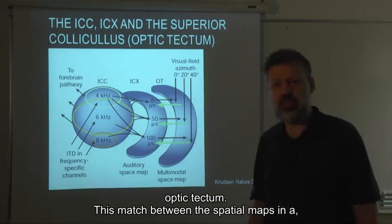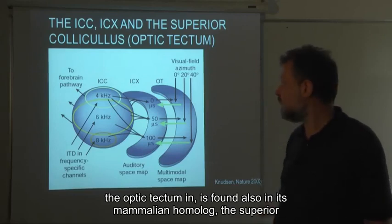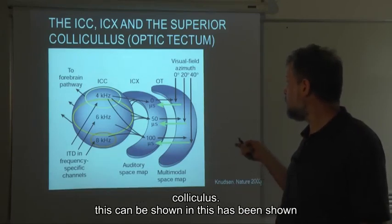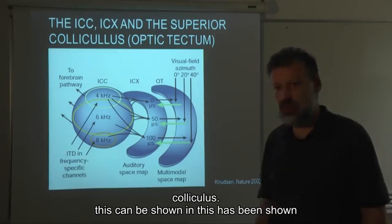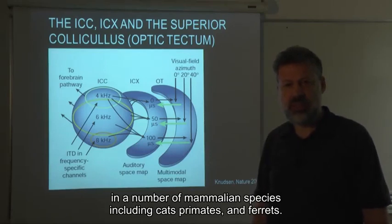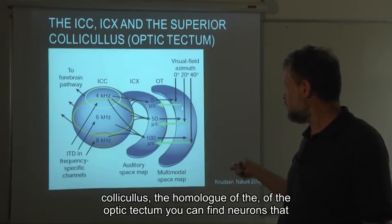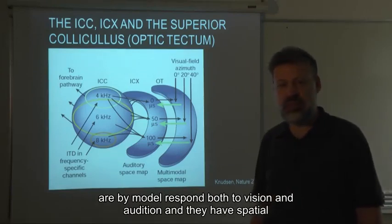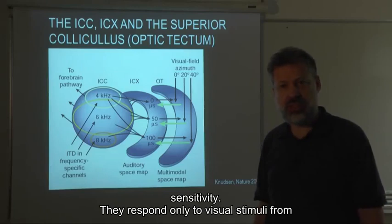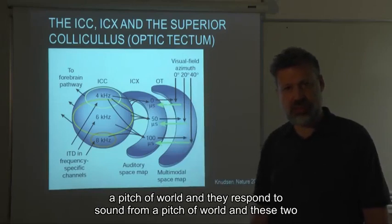This match between spatial maps is found also in the mammalian homolog of the optic tectum — the superior colliculus — and has been shown in a number of mammalian species including cats, primates, and ferrets. If you record from the appropriate location in the superior colliculus, you can find bimodal neurons that respond both to vision and to audition. They have spatial sensitivity — they respond only to visual stimuli from a patch of the world, and to sound from a patch of the world, and these two patches match.